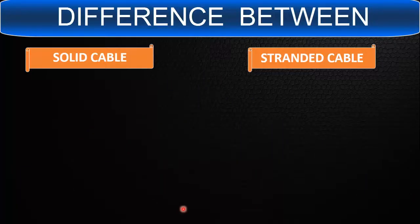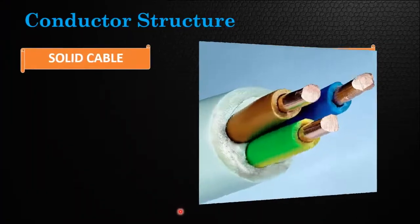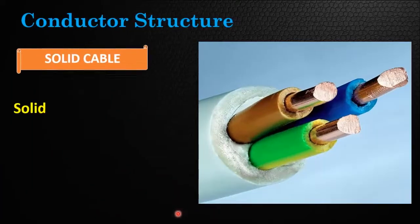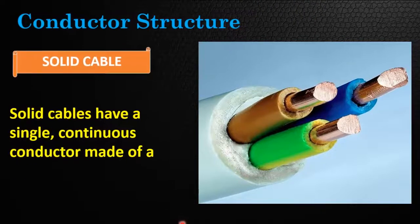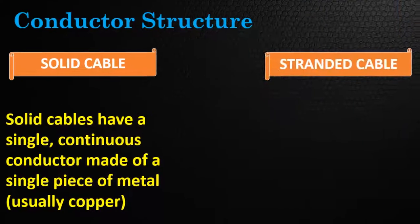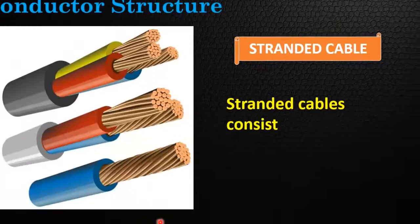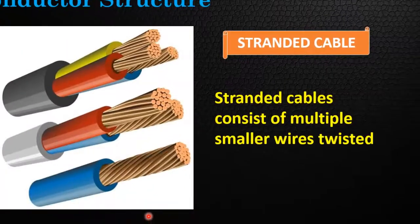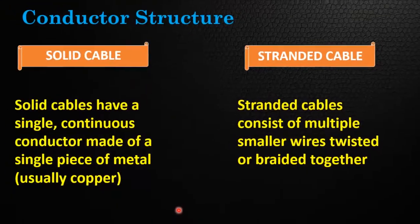Let's start with the first difference, which is based on construction. Solid cables have a single continuous conductor made of a single piece of metal, usually copper. Whereas stranded cables consist of multiple smaller wires, twisted or braided together.